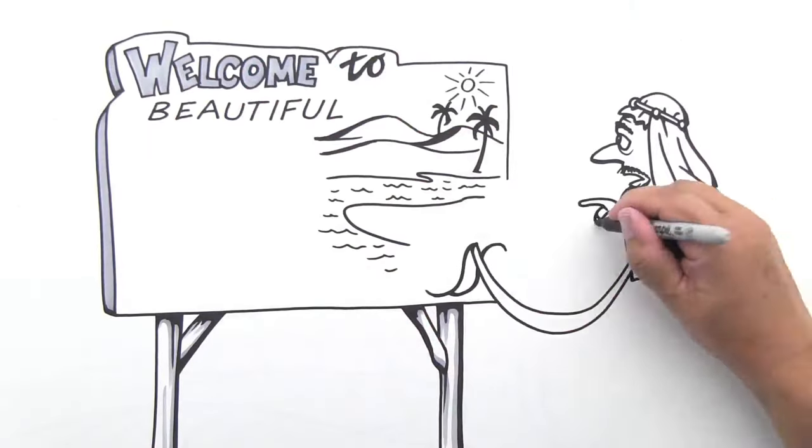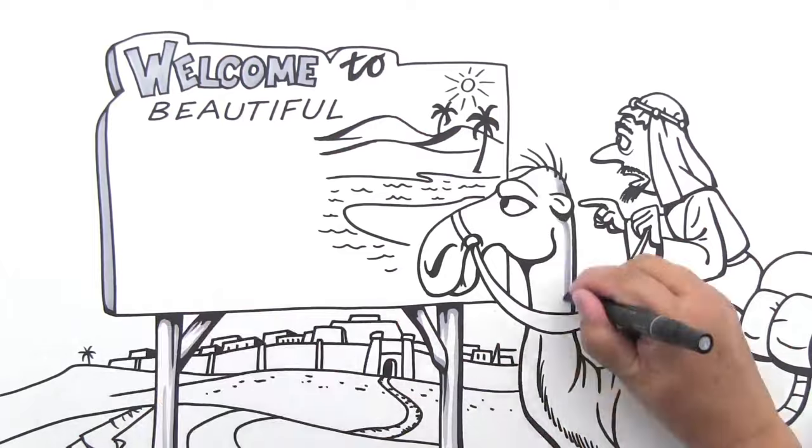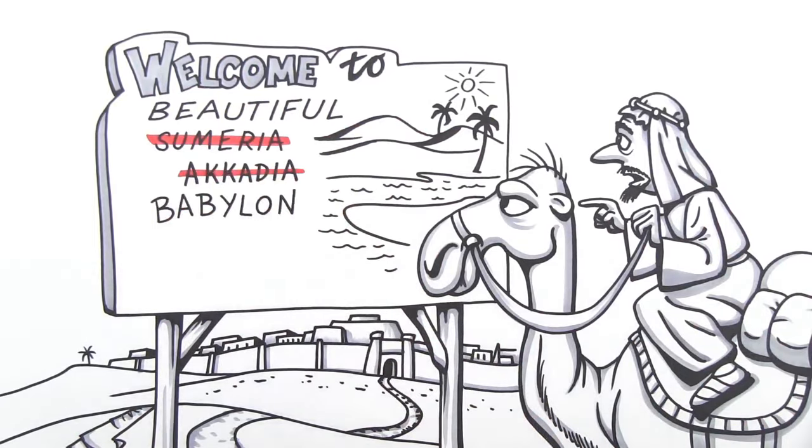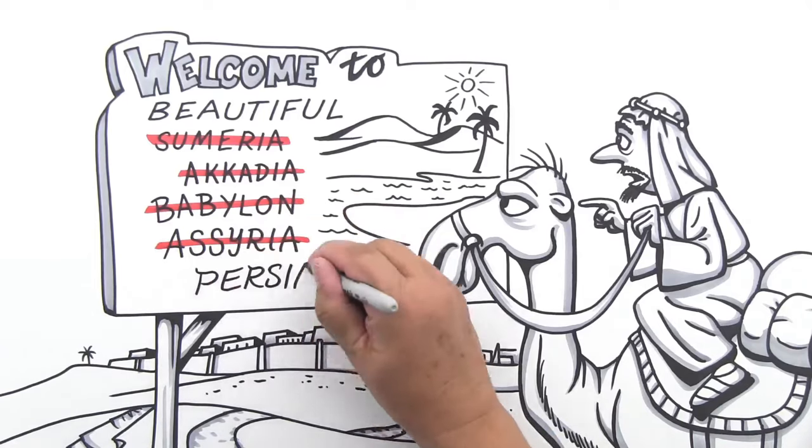Mesopotamia actually refers to an area rather than a country. At different times, it was ruled by the Sumerians, the Akkadians, the Babylonians, the Assyrians, and the Persians.